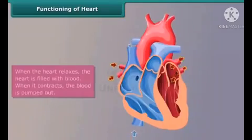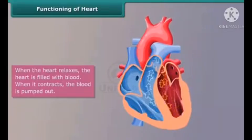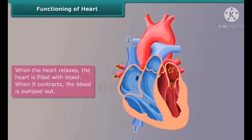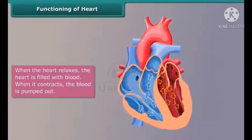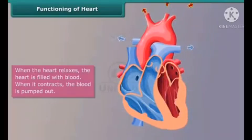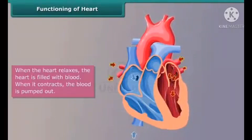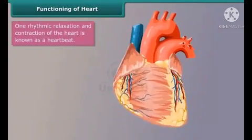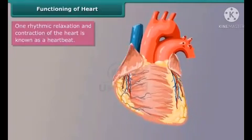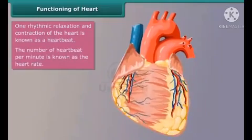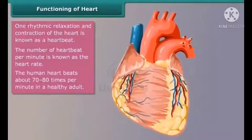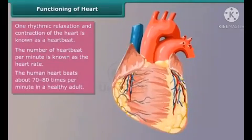The heart pumps blood through a rhythmic pattern of relaxation and contraction. When the heart relaxes, it is filled with blood; when it contracts, the blood is pumped out. One rhythmic relaxation and contraction of the heart is known as a heartbeat. The number of heartbeats per minute is known as the heart rate. The human heart beats about 70 to 80 times per minute in a healthy adult.